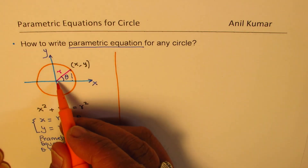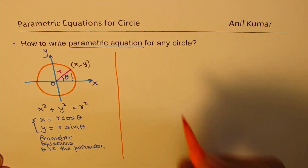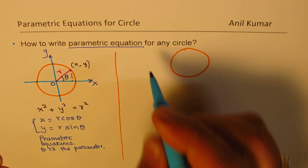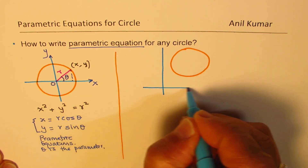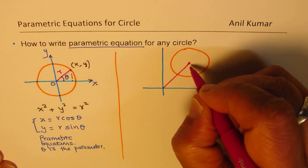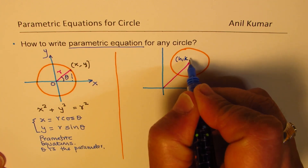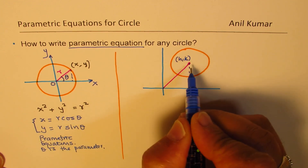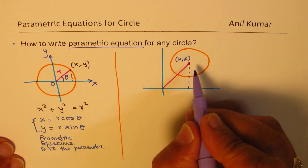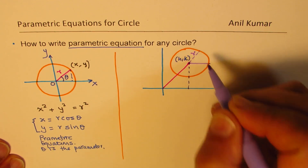If the circle is not centered at the origin, what happens? Let's take a circle whose center has been moved to a different point. We have a point h, k as the center, and let us say the radius is r.